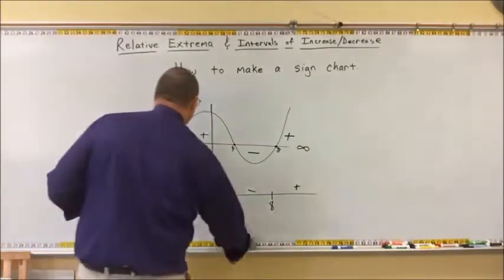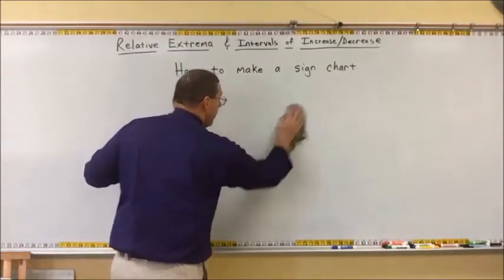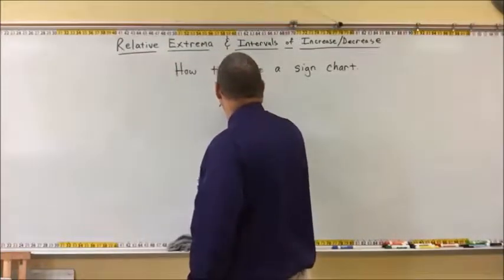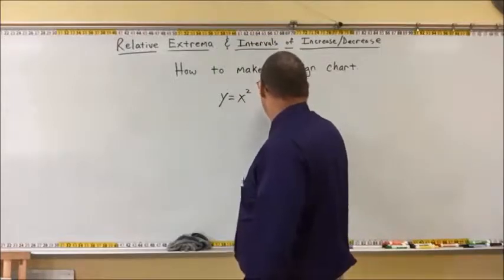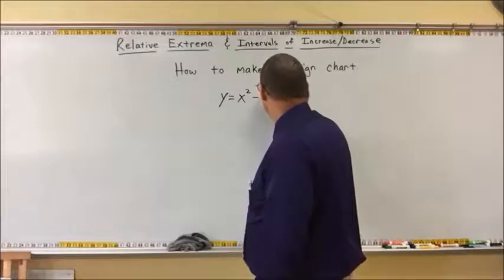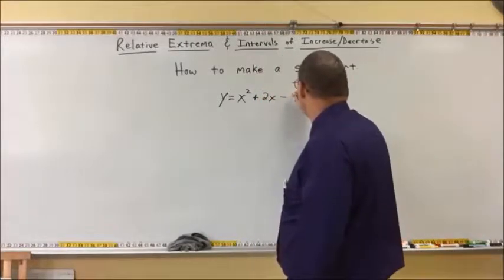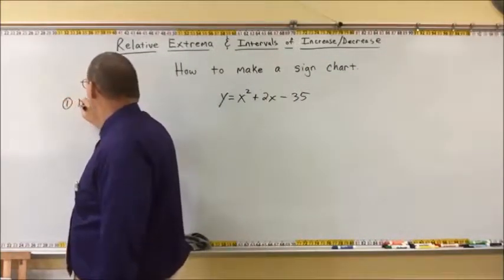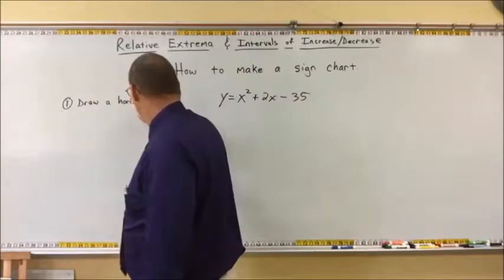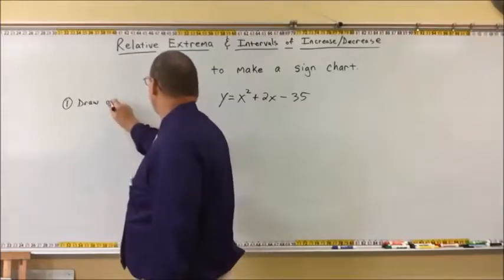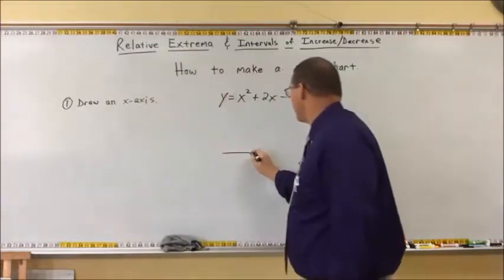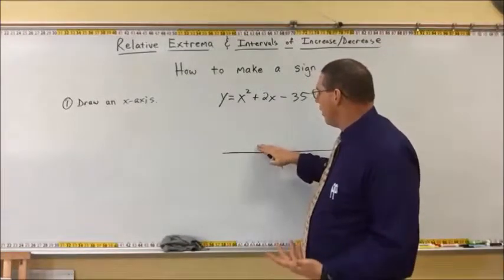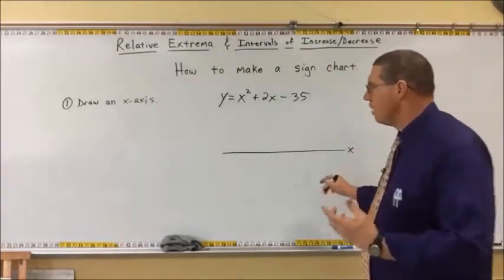And that's what I'm going to show you how to do right now. I'm going to put the steps over on the side. The very first step: let's say we have the function y equals x squared plus 2x minus 35. We want to create a sign chart. Step one is draw an x-axis. A sign chart doesn't have a y-axis — you only have the x-axis, because you're not identifying what the values are, just whether they are positive or negative along the x-axis.